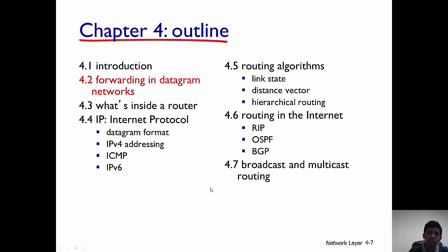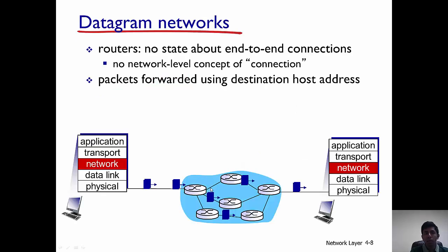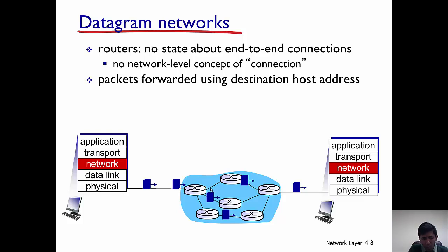In this lecture we are going to talk about forwarding in datagram networks. The internet is an example of a datagram network, and the routers in the internet do not contain state about end-to-end connections. At the network level there is no concept of a connection — the concept of connection is mainly logical and it is mainly in the transport layer.